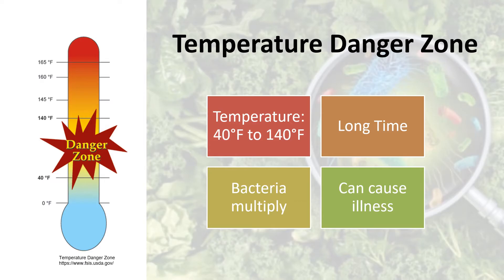The term temperature danger zone is the range of temperature where bacteria can rapidly multiply to dangerous levels that can cause illness. This temperature range can vary depending on the food, but for most foods is between 40 degrees Fahrenheit to 140 degrees Fahrenheit.